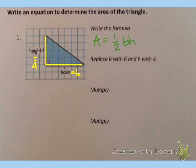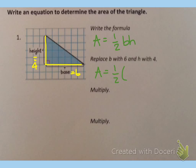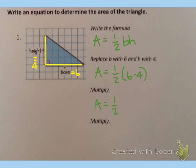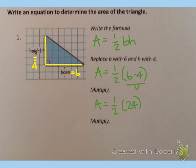So that means the height is four units. This means that we can replace the B in the formula with six because the base is six units, and we can replace the H in the formula with four because the height is four units. So I'm going to have one-half times six times four. And now we multiply to solve. According to order of operations, we need to do what comes in the parentheses first, so I have area equals one-half times whatever six times four is.